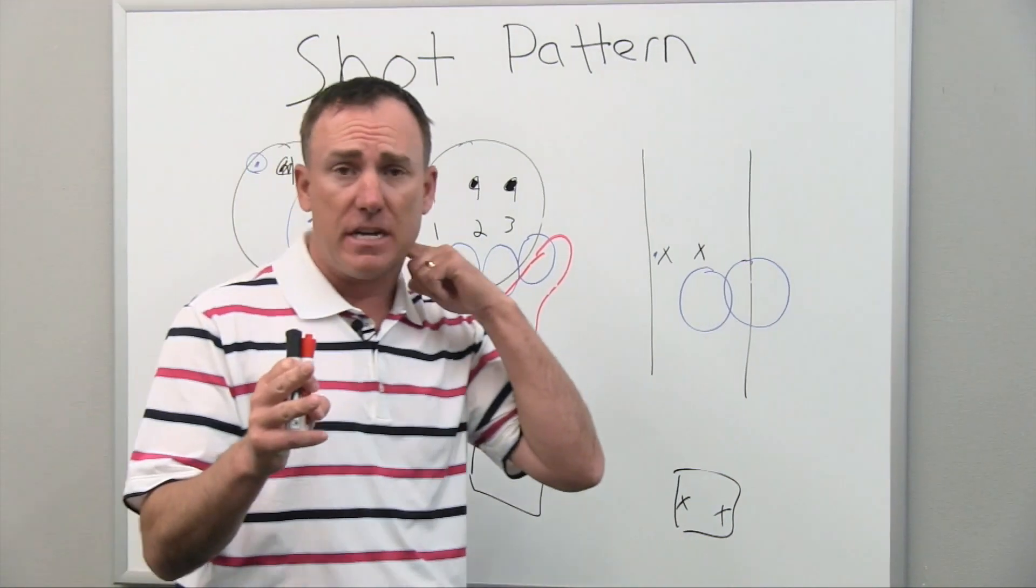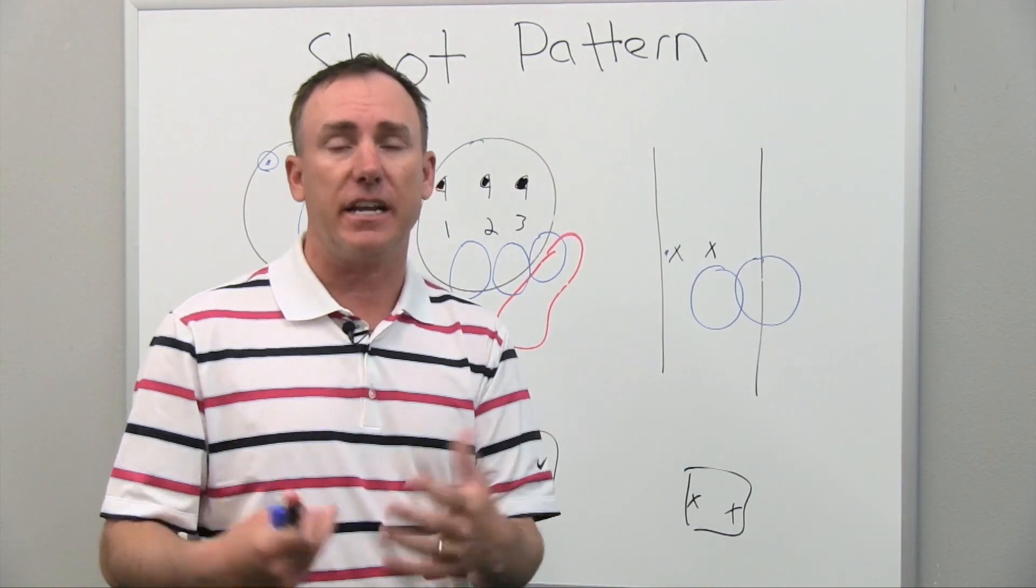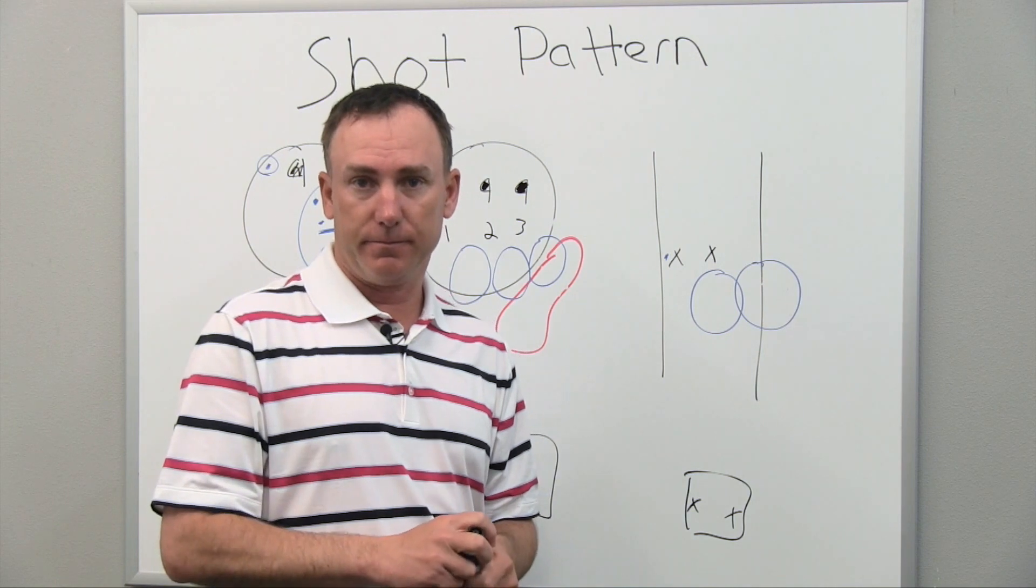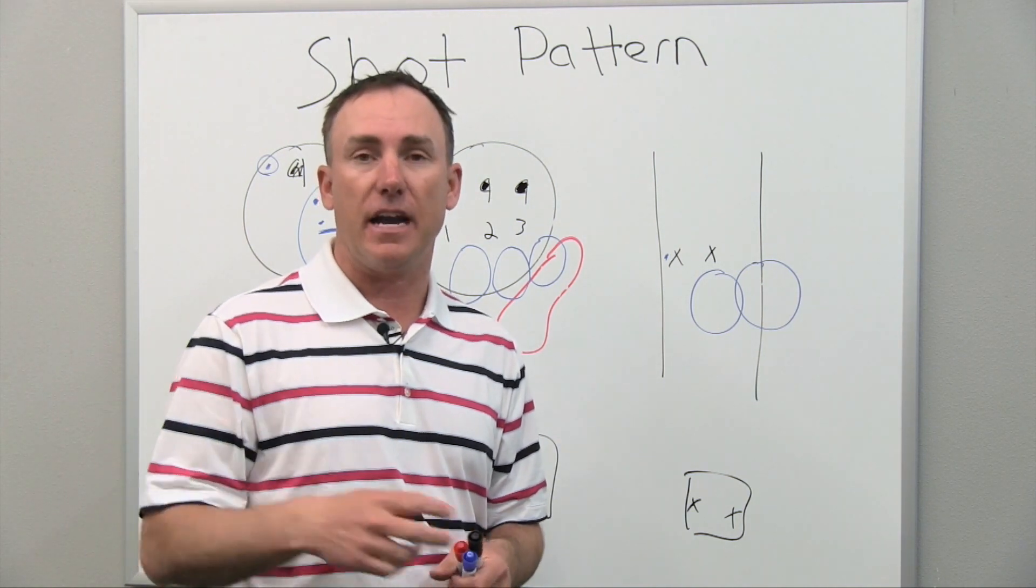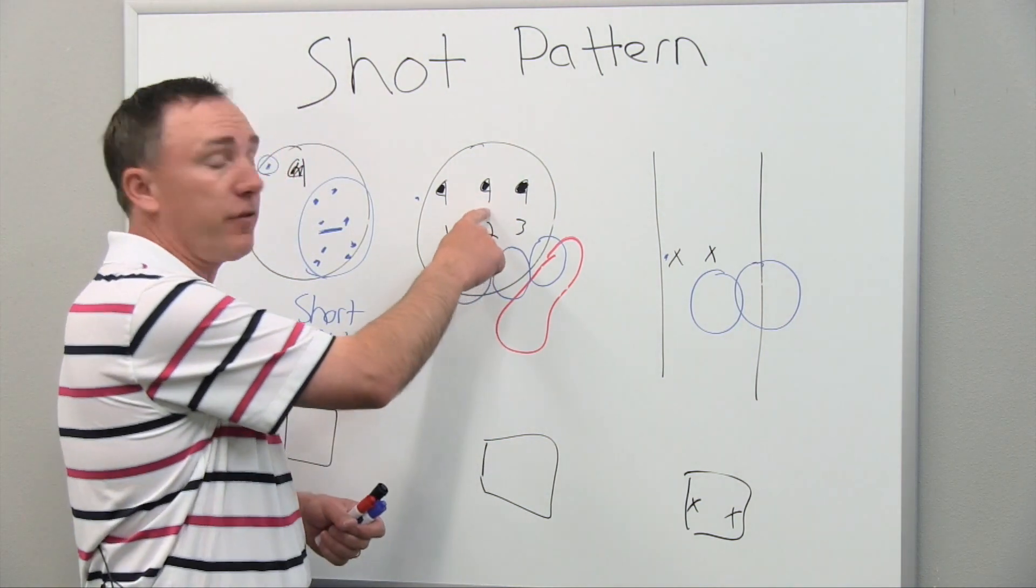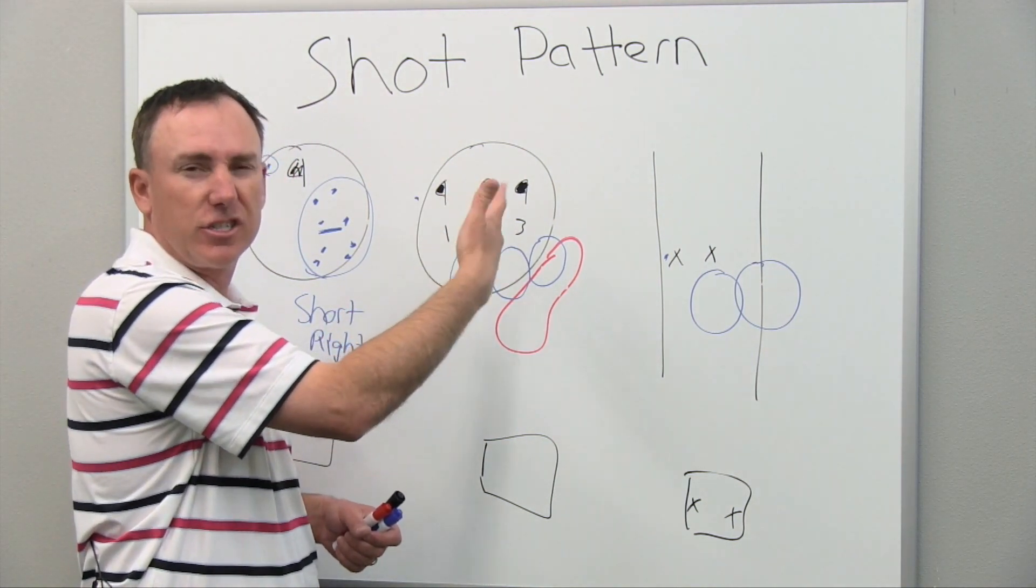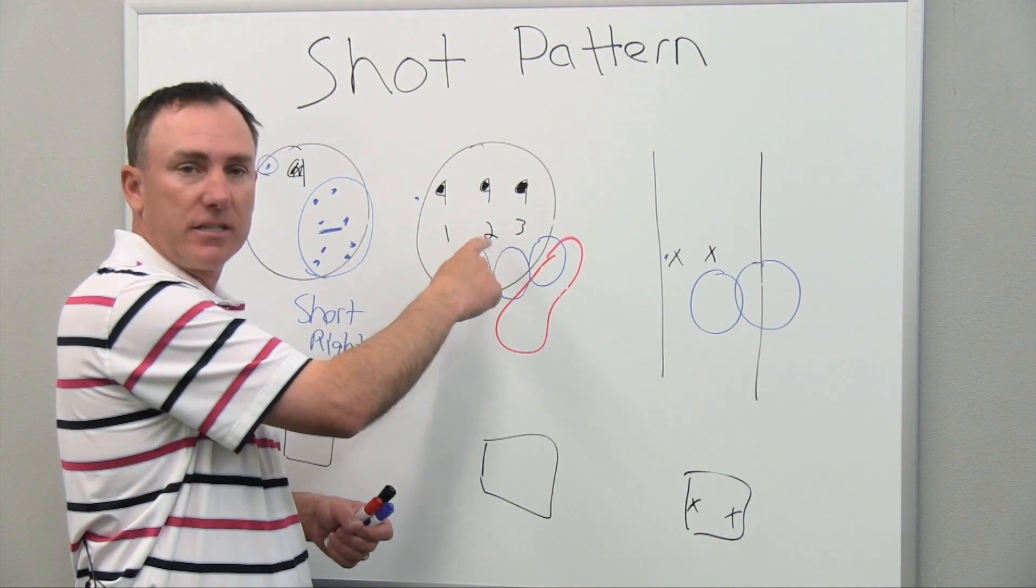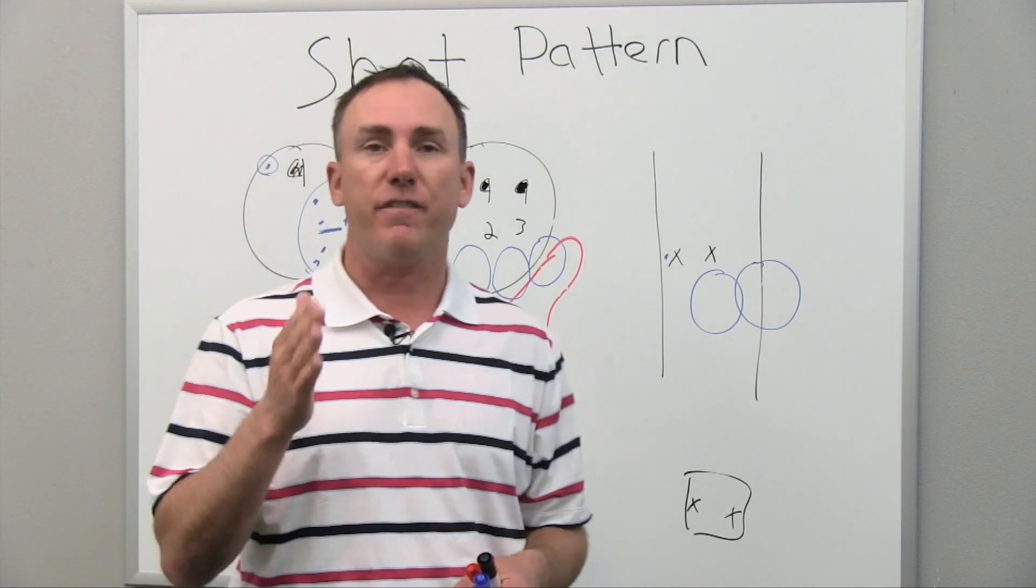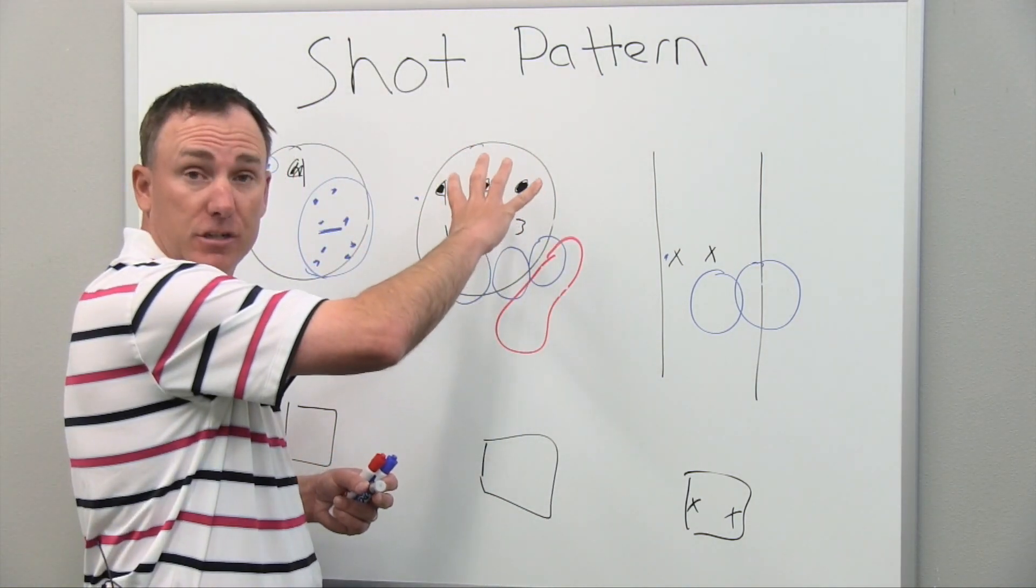Now I said earlier that I want to share with you some guidelines. Here's the guidelines I give my students. If you're shooting above 90, if your score is anywhere above 90 on a regular basis, I would tell you to aim for the middle of the green all of the time, unless of course it's a chip shot. But if you're 100 yards out, 150 yards out, 200 yards out, you should be aiming for the middle of the green. Because when you aim for the middle of the green, you give yourself a big margin of error.